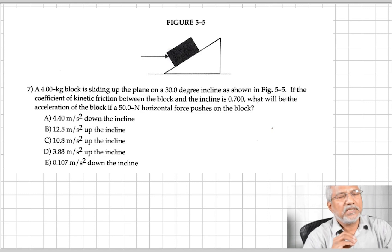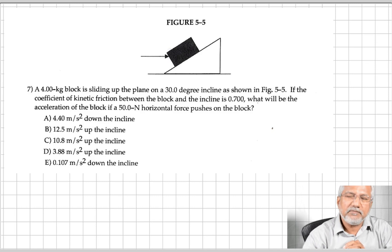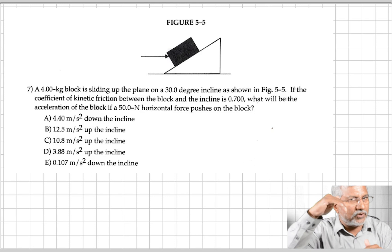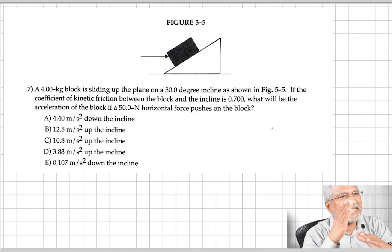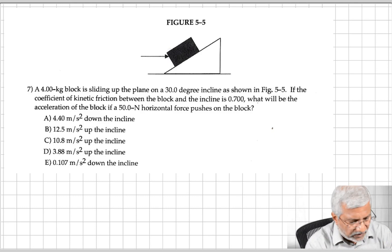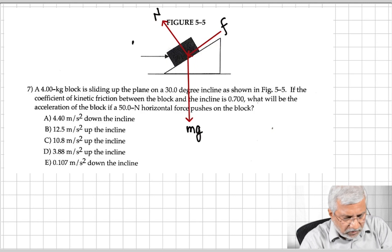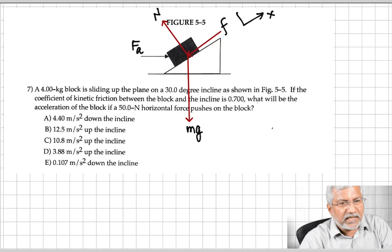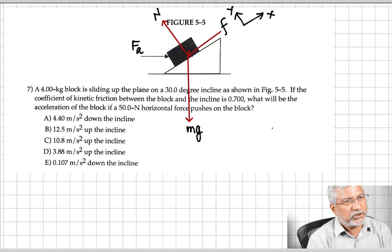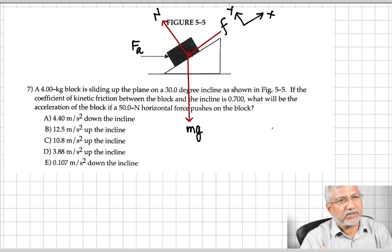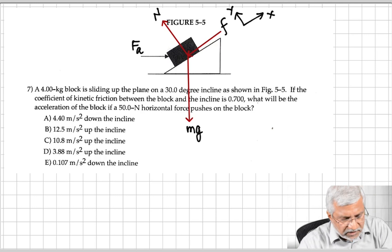The first and most important thing when you try to do such problems is to draw a free body diagram. It's important to remember that the weight of the object always acts vertically down and the normal force acts perpendicular to the surface. There is also the applied force and friction. Friction always opposes motion, so since you're pushing the object up, friction acts down along the surface. These are the four forces.